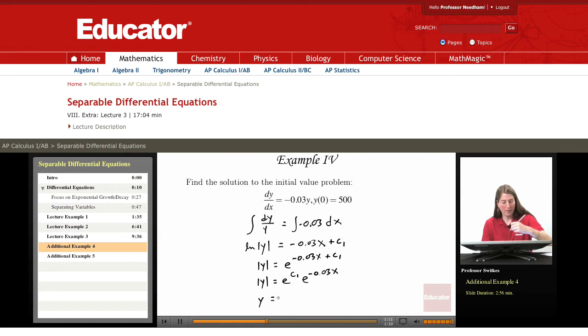Removing the absolute values we get y equals plus or minus e to the c1 times e to the negative 0.03x. Okay now this is where I'm going to rename this quantity which is just a constant after all. I'm going to rename it as c and so we have y equals c e to the negative 0.03x.